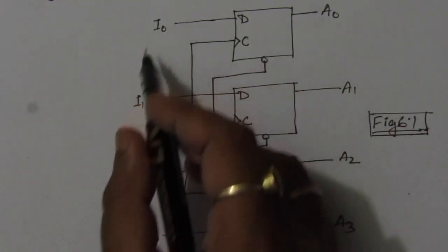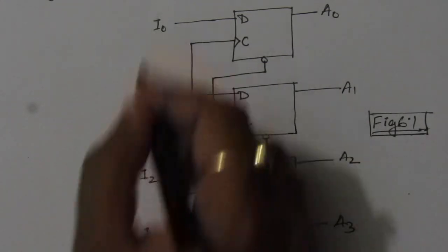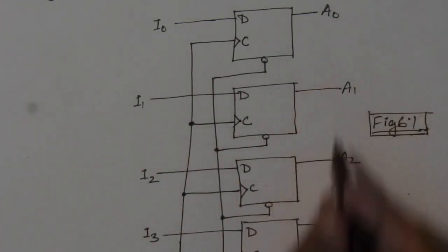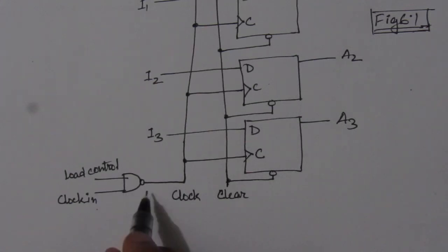we will have this flip-flop operational. That means whatever be the data input, here we have 4-bit input, that will be transferred to this 4-bit output. So when we introduce this NAND gate, this clock signal will be modified.